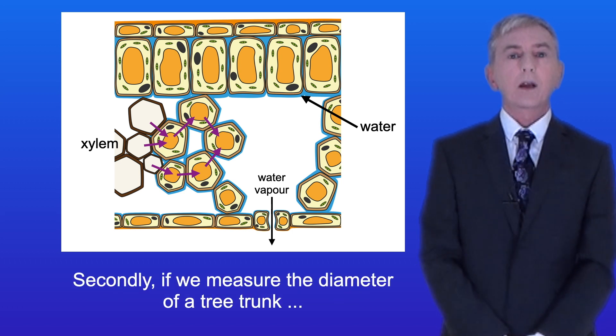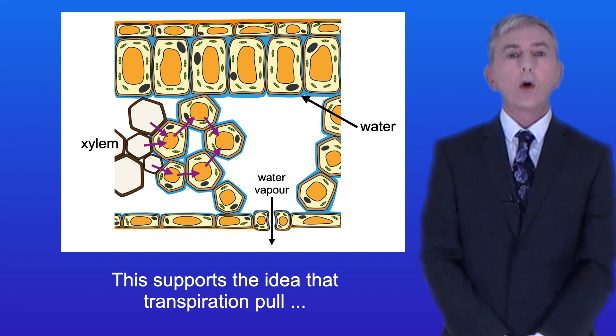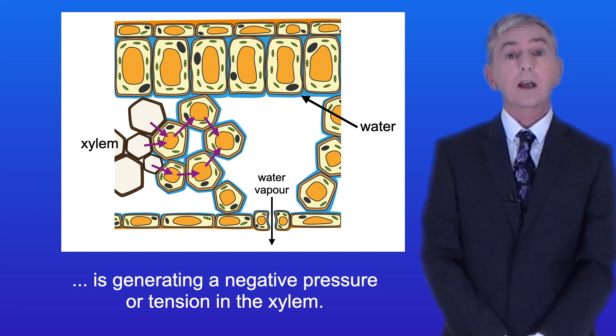Secondly, if we measure the diameter of a tree trunk we can see that this reduces when transpiration is at its maximum. This supports the idea that transpiration pull is generating a negative pressure or tension in the xylem.